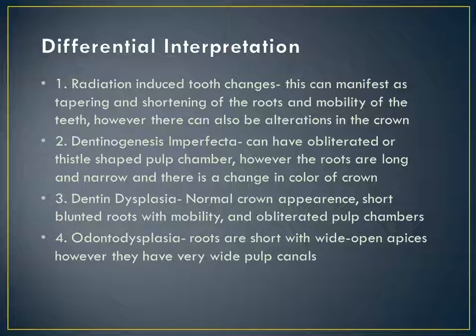The differential interpretation includes: radiation-induced tooth changes, which can manifest as tapering and shortening of the roots and mobility of the teeth, however there can also be alterations in the crown; dentinogenesis imperfecta, which can have obliterated or thistle-shaped pulp chambers, however the roots are long and narrow and there is a change in color of the crown; dentin dysplasia, which shows normal crown appearance with short blunted roots, mobility, and obliterated pulp chambers; and odontodysplasia, where the roots are short with wide open apices and very wide pulp canals.